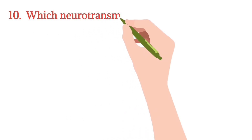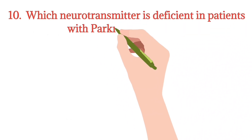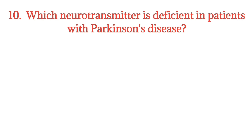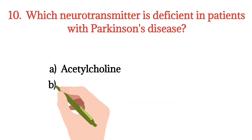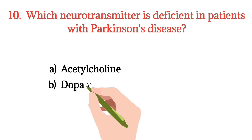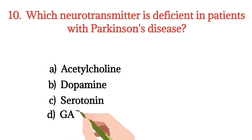MCQ number 10. Which neurotransmitter is deficient in patients with Parkinson's disease? Option A: Acetylcholine. Option B: Dopamine. Option C: Serotonin. Option D: GABA. The right option is Option B.